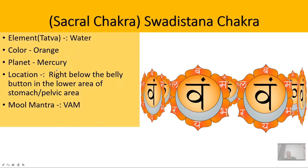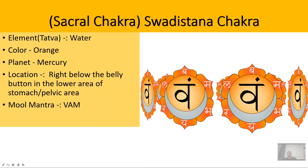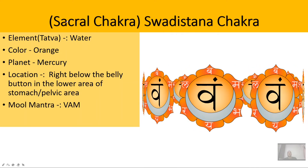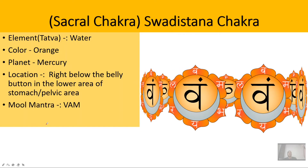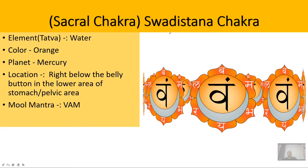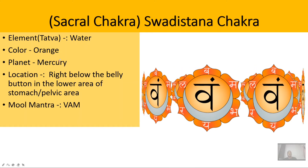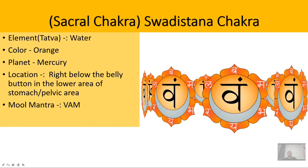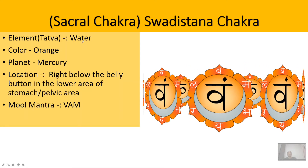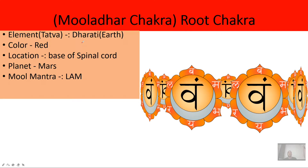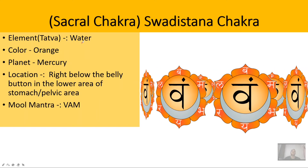The second chakra is the Swadhisthana chakra, or the sacral chakra in English. The color of this chakra is orange. The planet associated with this chakra is Mercury. Each chakra is associated with one element — the Muladhara is associated with earth, and the Swadhisthana chakra is associated with water.